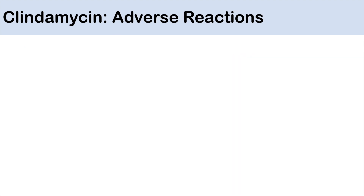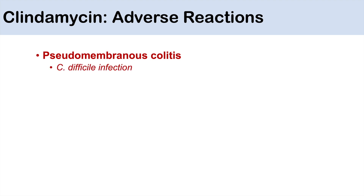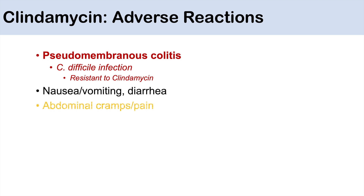No antibiotic comes without risks. Clindamycin has a particular propensity to increase the risk of pseudomembranous colitis, which is due to a Clostridioides difficile infection. Clindamycin can increase the likelihood of C. difficile infection because C. difficile is resistant to clindamycin. Other adverse reactions include nausea, vomiting, diarrhea, abdominal cramps and pain, and a metallic taste — generally at higher concentrations.